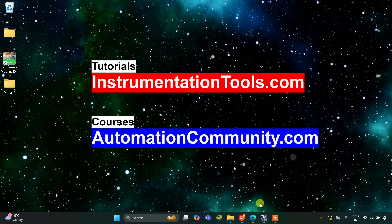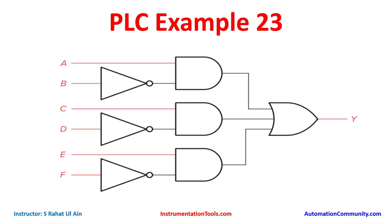Hello everyone, welcome to Automation Community. Today in this video we are going to develop ladder logic from a digital logic circuit. Let's look at the first example — Example 23. We have six inputs: A, B, C, D, E, and F, and one output Y. For inputs A, C, and E we will use normally open contacts. For inputs B, D, and F there is a NOT logic gate, so we will use normally closed contacts.